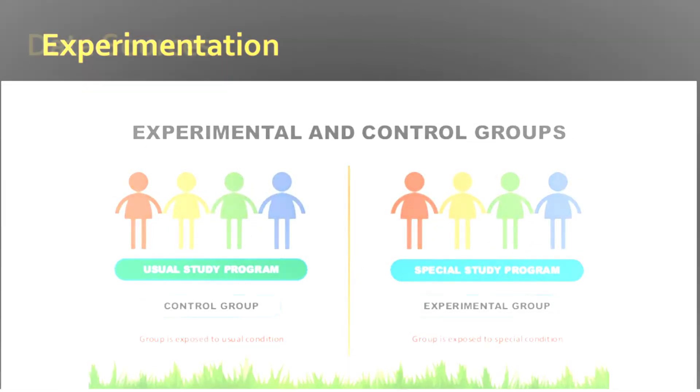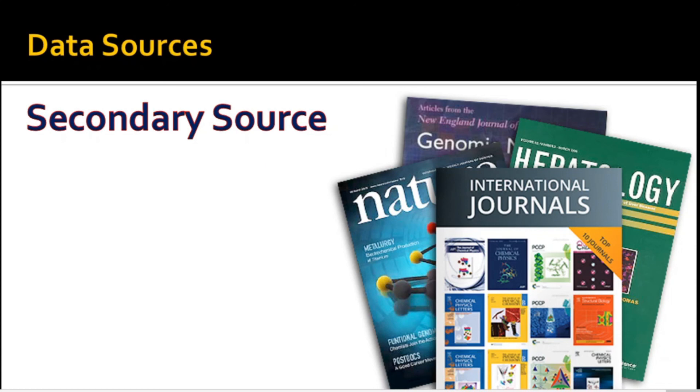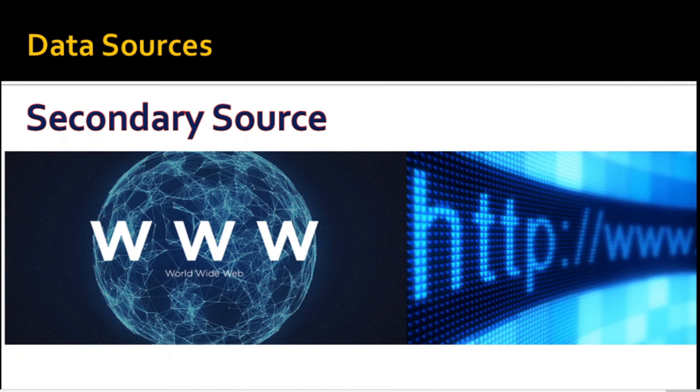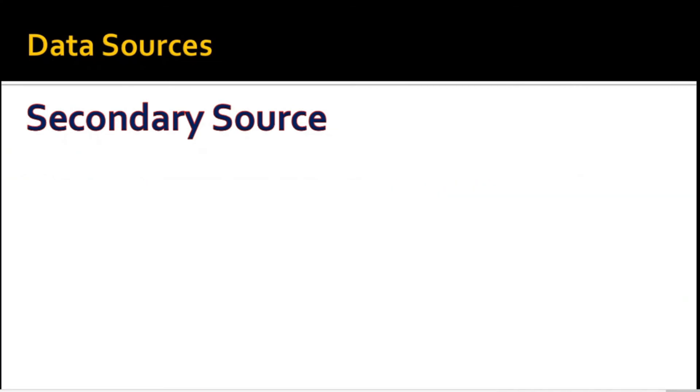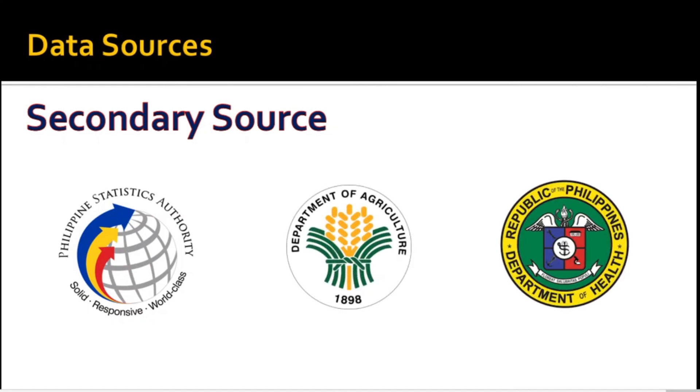We can gather data either from a primary source or a secondary source. A primary source refers to sources from which a researcher directly and originally gathers the data. When a researcher conducts an interview to people, administer questionnaire or even observe them in their community, these people become primary data sources. Secondary sources are pre-existing data sources such as research journals, books, the internet, and it also includes agencies that collect and store data like hospitals, the Philippines Statistics Authority, the Department of Agriculture, and the Department of Health.